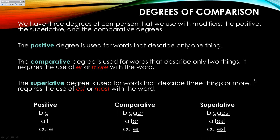So I can take the word big — that's just a one-syllable word. If I want to compare two things, I say this one is bigger than that one. If I'm comparing three things, I add EST and say, of the three, this is the biggest. Most of our words do just add ER and EST.